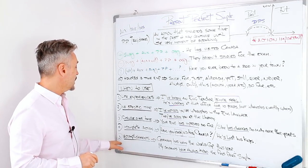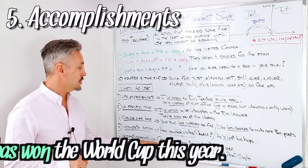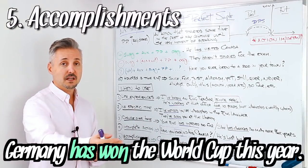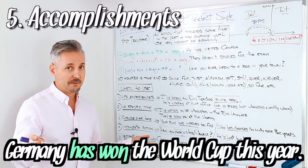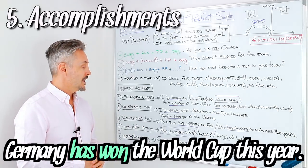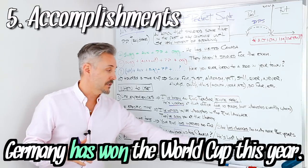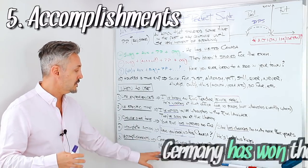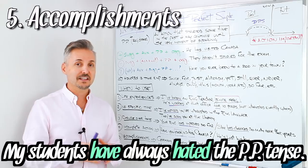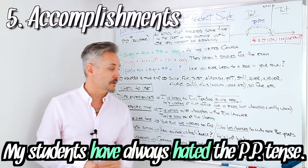The last way to use it is for accomplishments. For example, Germany has won the World Cup this year. This year means that it's still going on, right? We are in 2017, for example. And Germany has won the World Cup this year. It's not true, but we suppose that we just pretend that Germany has won the World Cup this year. Or another example: My students have always hated the present perfect simple. I hope after this lesson they don't hate it anymore.